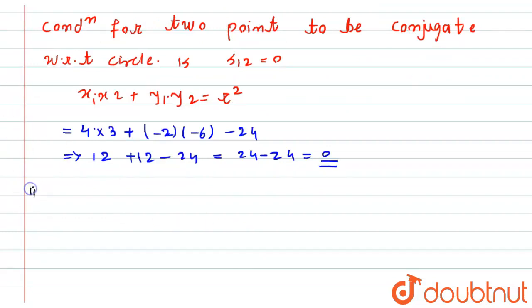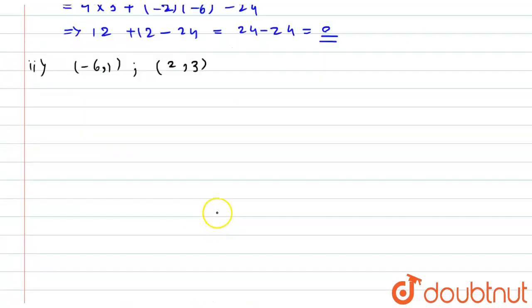Now similarly, I can say for the second one also, that is, we have the point -6 comma 1 and the second point is 2 comma 3. And its corresponding equation of the circle is x² + y² - 2x + 2y + 1 = 0.